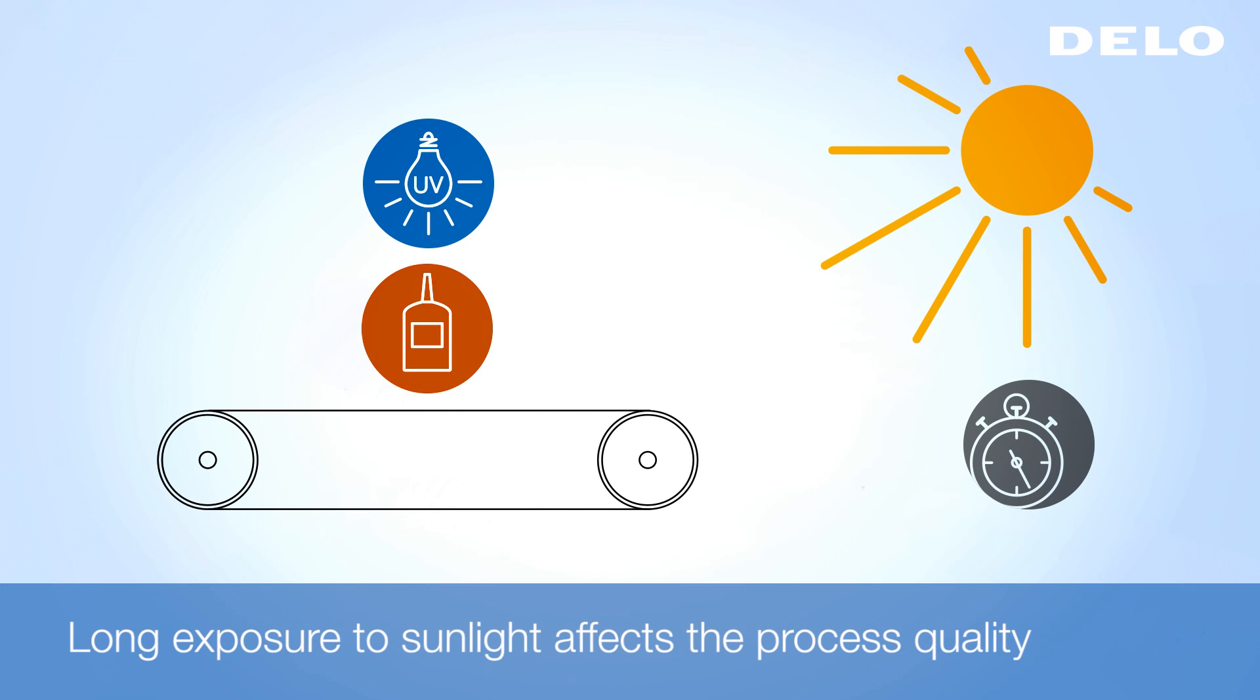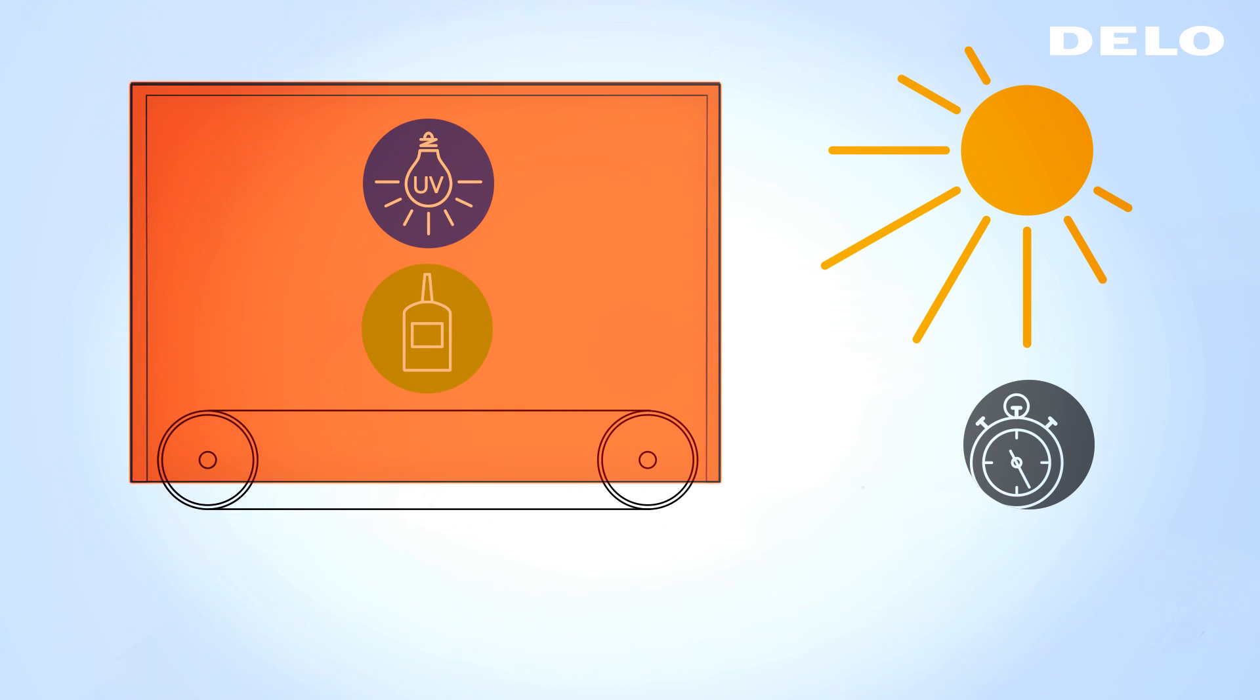Therefore, for best results, the whole process line must be protected from scattered light. Commonly, this is done with a special UV filter.